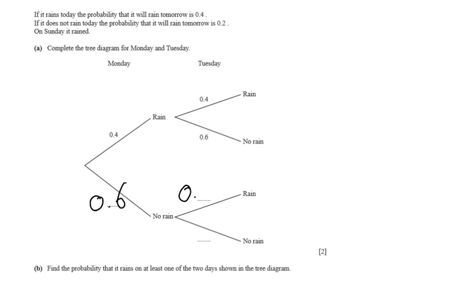And then hopefully you realize that the no rain is going to be 0.8, because again together it needs to add up to 1.